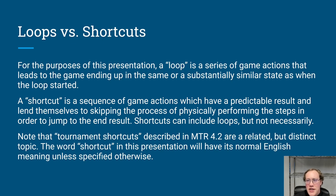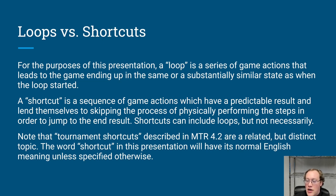First, I want to talk about the difference between loops and shortcuts. For the purposes of this presentation, a loop is a series of game actions that leads to the game ending up in the same or substantially similar state as when it started. It doesn't have to be exactly the same — substantially similar is good enough. A shortcut is a sequence of game actions with a predictable result that can be executed by skipping through the intermediate steps and jumping straight to the end result. Shortcuts can include loops, but not necessarily.